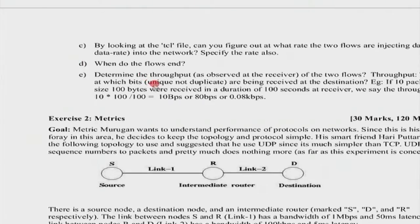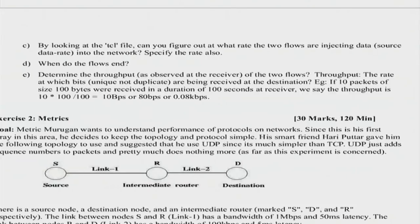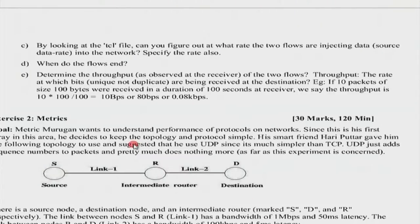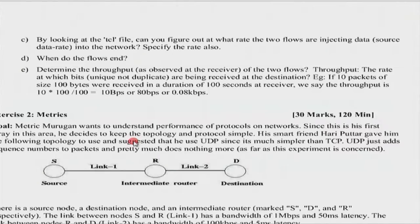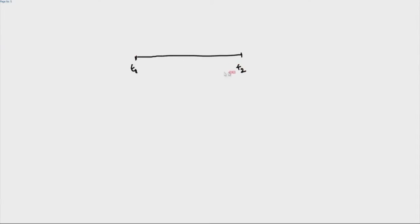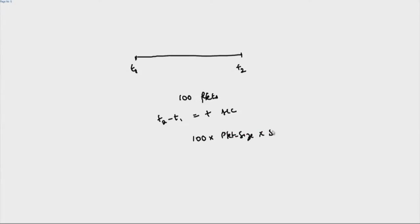There are a few things asked - it asks you to calculate the throughput at the receiver for two flows. Let me emphasize what I mean by throughput. When you are measuring something at a destination, let's say you started at time t1 and there is time t2. At t1 the receiver received the first packet and at t2 it received the hundredth packet. So between t1 and t2 it has received 100 packets. t2 minus t1 is the time, call it t seconds. Throughput will be 100 times the packet size in bytes, multiplied by 8 to convert to bits, divided by t seconds. That is the throughput at the receiver, and this is what I am asking you to calculate.